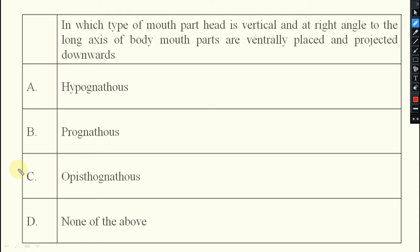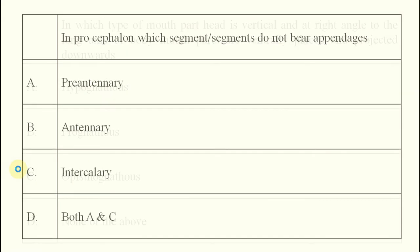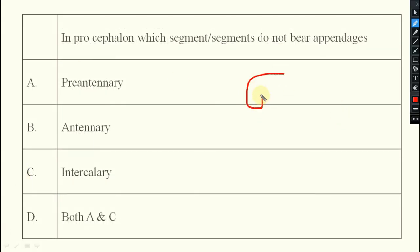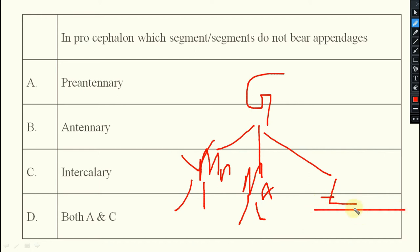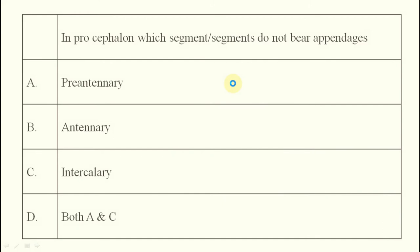Gnathocephalon is also divided into three segments: mandibular, maxillary, and labial. In mandibular, one pair of mandibles will be there; in maxillary, one pair of maxillae will be there; and in labial, the labium — the lower lip — will be there. Do not forget this.